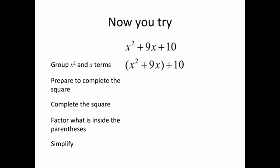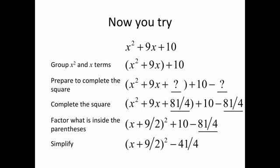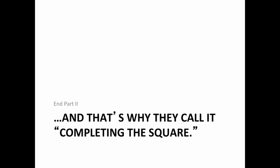First, we group the first two terms and put in the empty spaces. We complete the square by taking half of 9 — that's 9 halves — and squaring it to get 81 fourths. So that's x squared plus 9x plus 81 fourths, plus 10 minus 81 fourths. Factor what's inside the parentheses to x plus 9 halves squared plus 10 minus 81 fourths. Simplify what's outside to get x plus 9 halves squared minus 41 fourths. And that's completing the square. Next, we're going to look at a geometric model for non-monic polynomials.